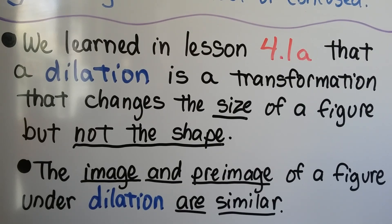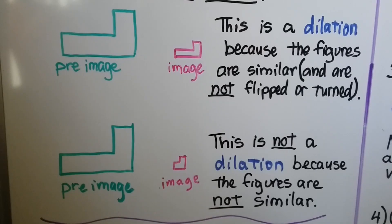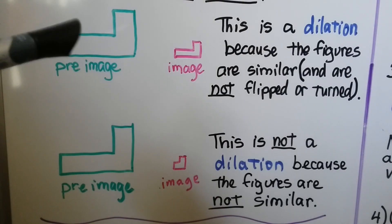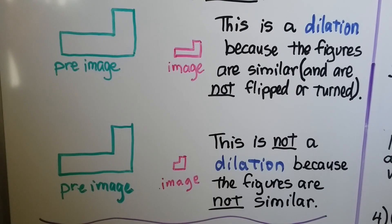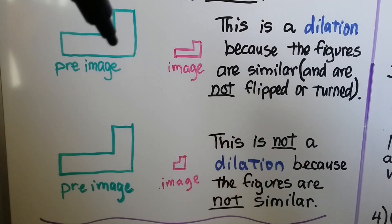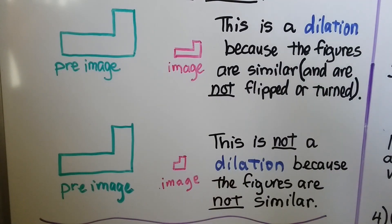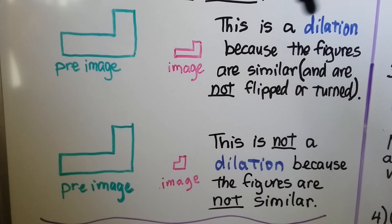We learned in lesson 4.1 back in chapter four that a dilation is a transformation that changes the size of a figure but not the shape. The image and pre-image of a figure under dilation are similar. So if you take a look at this green figure — that's the pre-image — and then we've got our pink image. This is a dilation because the figures are similar.